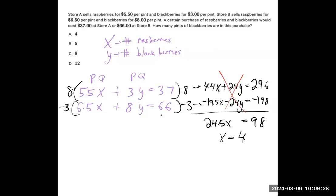We can plug that back into either equation to get Y. We can say 6.5 times 4 plus 8Y equals 66. 6.5 times 4 is 26, so 26 plus 8Y equals 66. Take away 26, and 8Y equals 40. Divide by 8, and Y is 5.